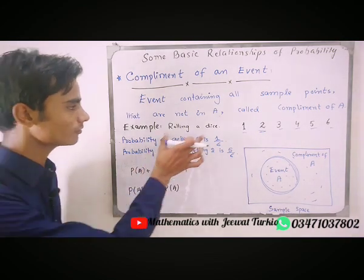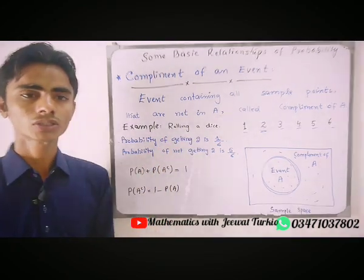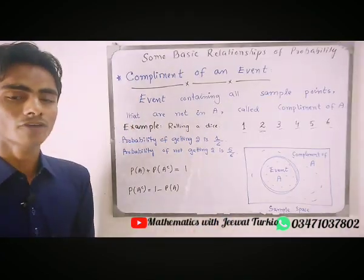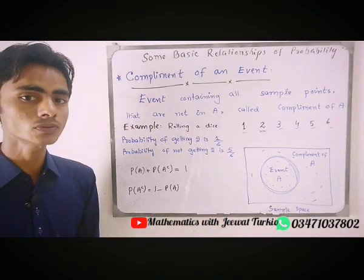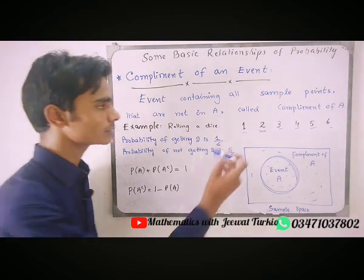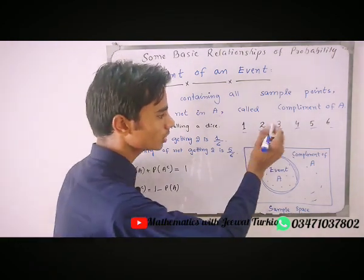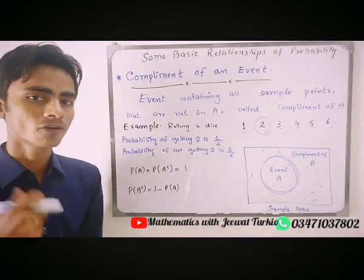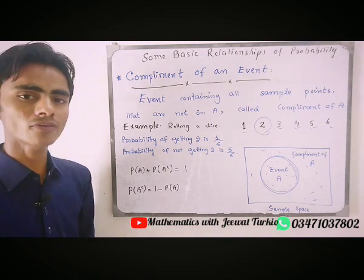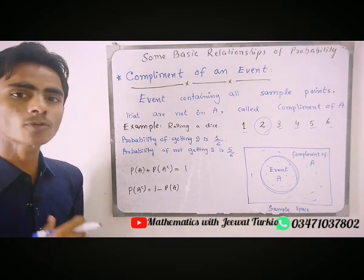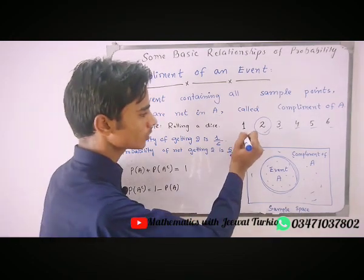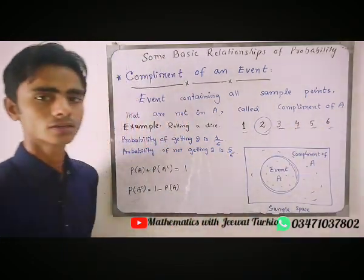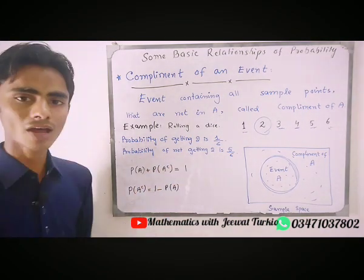Let's take an example. If I am rolling a dice, the experimental outcomes are 1, 2, 3, 4, 5, and 6. If I say what is the probability of getting 2, the probability of getting 2 is 1 by 6. In the same way, what is the probability of not getting 2? Not getting 2 is 5 by 6.